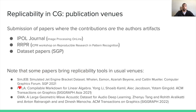A third option is to publish papers where one of the main contributions is that the proposed system or method is reproducible, or is the reproducibility of other works. This might be done in dedicated journals like ePOL, workshops such as RRPR, or tracks such as the dataset paper track at SGP. In some cases, papers providing useful tools or datasets can also be published in traditional venues such as SIGGRAPH.